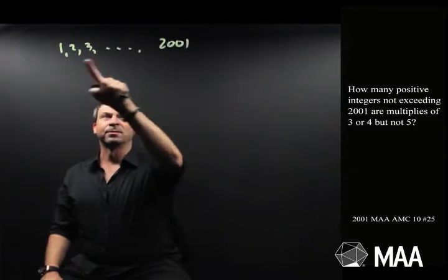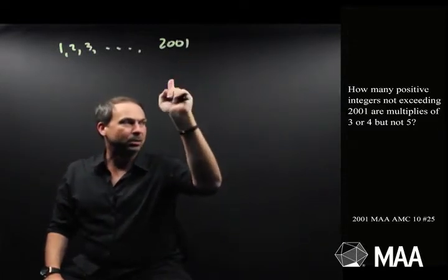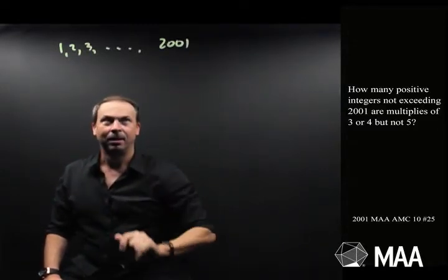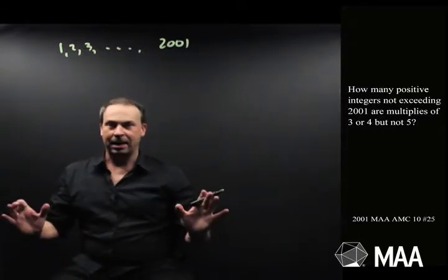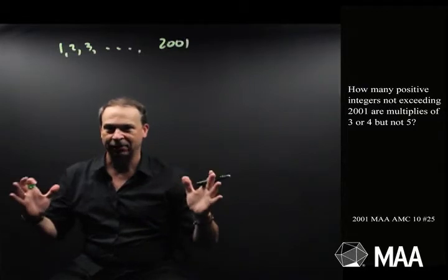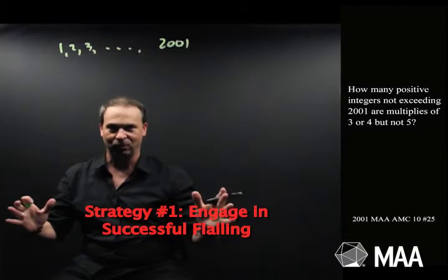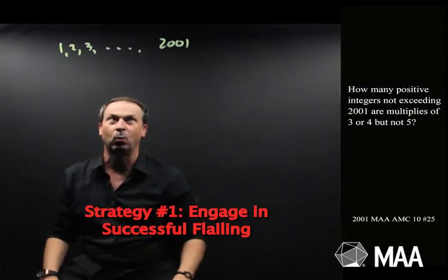How many of these are multiples of 3 or 4, but not multiples of 5? Alright, okay, well, just to get a feel for it, I think I kind of know what to do, so I'm going to engage in successful flailing, which means just do some stuff that feels right and hope it all comes together, strategy number 1.